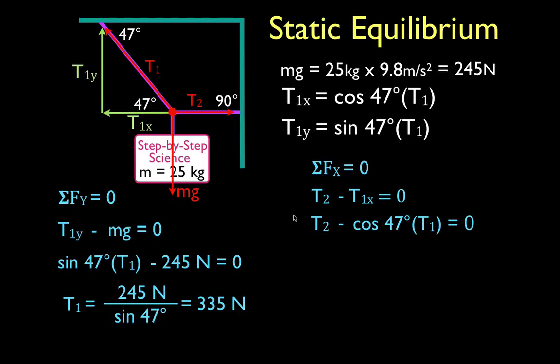Now, back to our other equation. We have one equation with two variables, T2 and T1, but now we know T1, so we can substitute T1 or 335 newtons in here for T1.